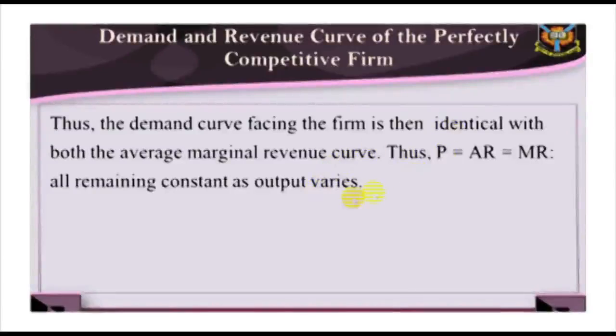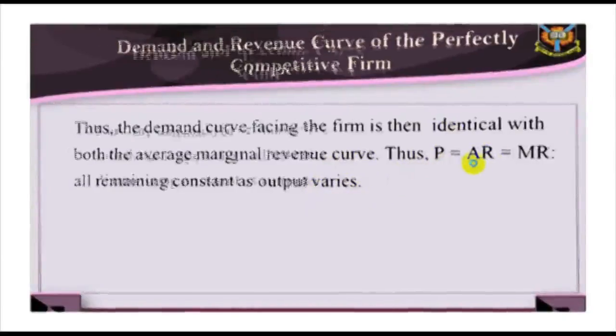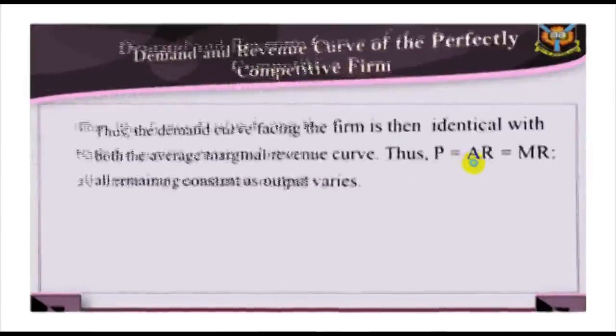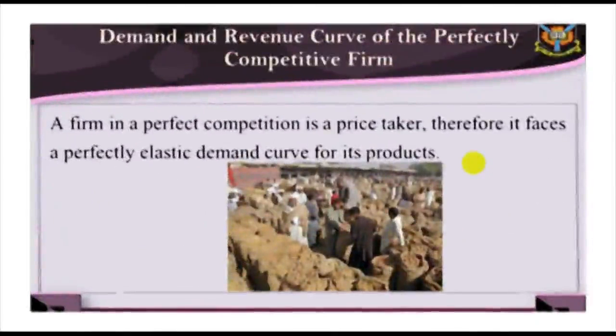All remaining constant as output changes. Since price is constant, each additional unit sold will increase the total revenue of the farmer. It therefore follows that total revenue rises steadily as output rises.